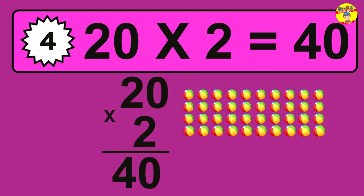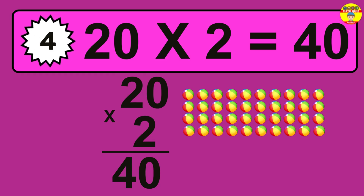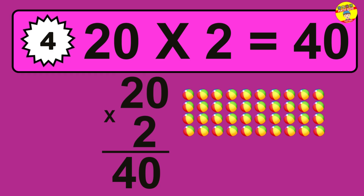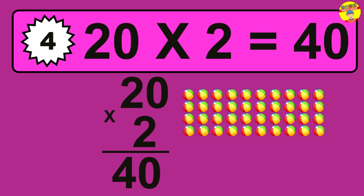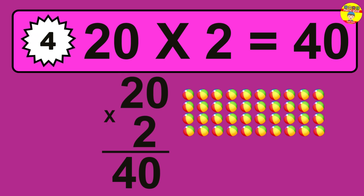Question four: 20 times 2 equals what? The answer is 20 times 2 is 40. To calculate, we have 20 groups with 2 balls each. So how many balls do we have? 40 balls.